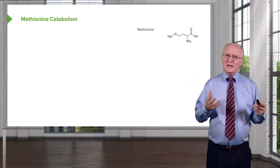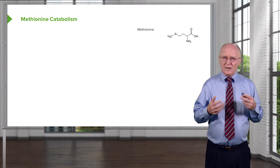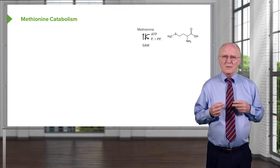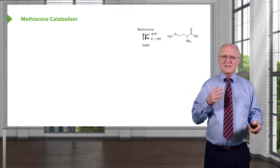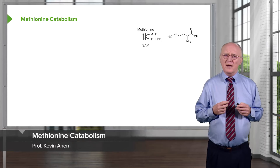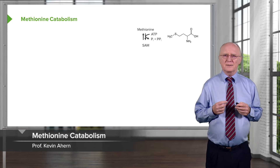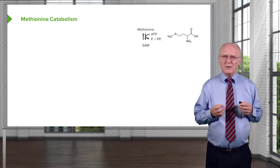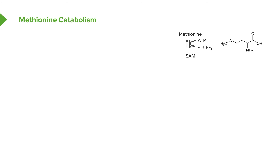Methionine is the other amino acid that contains a sulfur. In this process, methionine acts as a methyl group donor. Methionine is used to make S-adenosylmethionine in a rather complicated reaction: the adenyl part of ATP combines with methionine to make S-adenosylmethionine, otherwise known as SAM.